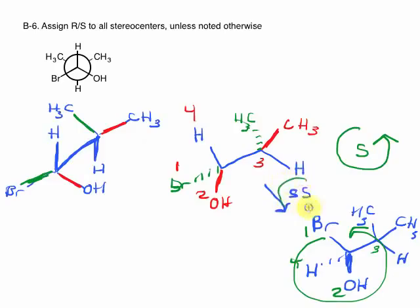However, we did this single swap. Anytime doing a single swap, you're going to invert R to S or S to R, vice versa. This is the single swap of this, which means this is the inverted stereocenter of this. So if this is S, this must be R. So this stereocenter here is R.